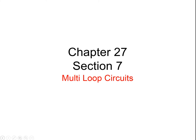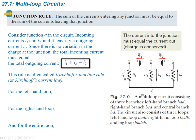We're going to continue chapter 27, covering section 7 which discusses multi-loop circuits. The junction rule says that the sum of the currents entering any junction must be equal to the sum of the currents leaving that junction.